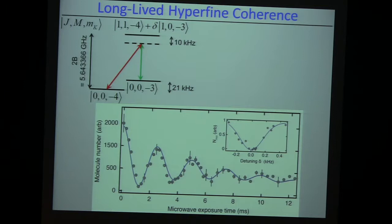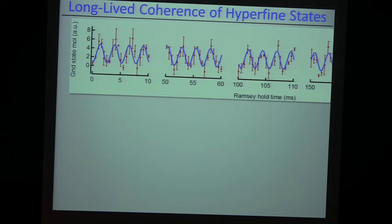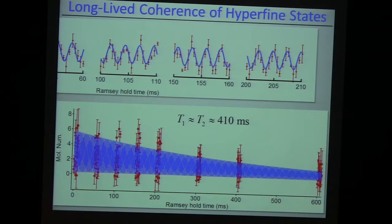It is nevertheless interesting to us to measure very faint interaction shifts in this transition, because that only depends on how precisely we can measure this 21 kilohertz. It turns out we can measure it really precisely. This shows the Ramsey revivals — up and down, up and down — as a function of time, which actually works for hundreds of milliseconds. We get a coherence time of 400 milliseconds for this nuclear spin combination — a rather healthy coherence time, which allows us to measure clock shifts, density-dependent shifts, hopefully at the Hertz-ish level.